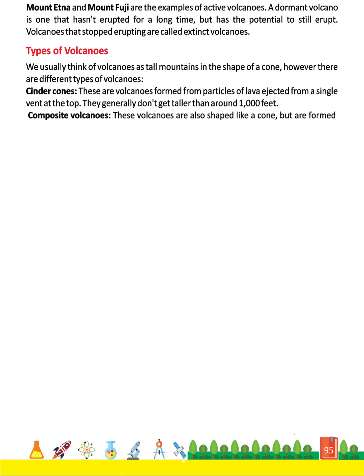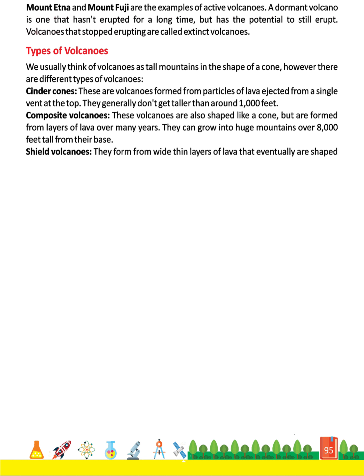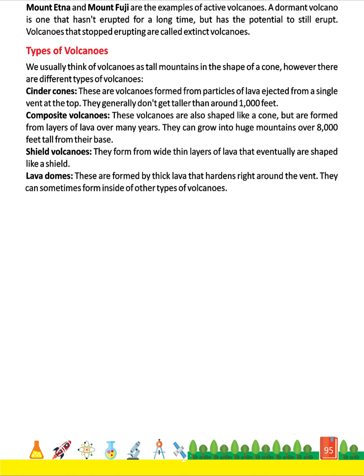Composite volcanoes are also shaped like a cone but are formed from layers of lava over many years. They can grow into huge mountains over 8,000 feet tall from their base. Shield volcanoes form from thin layers of lava that are eventually shaped like a shield. Lava domes are formed by thick lava that hardens right around the vent, and they can sometimes form inside other types of volcanoes.